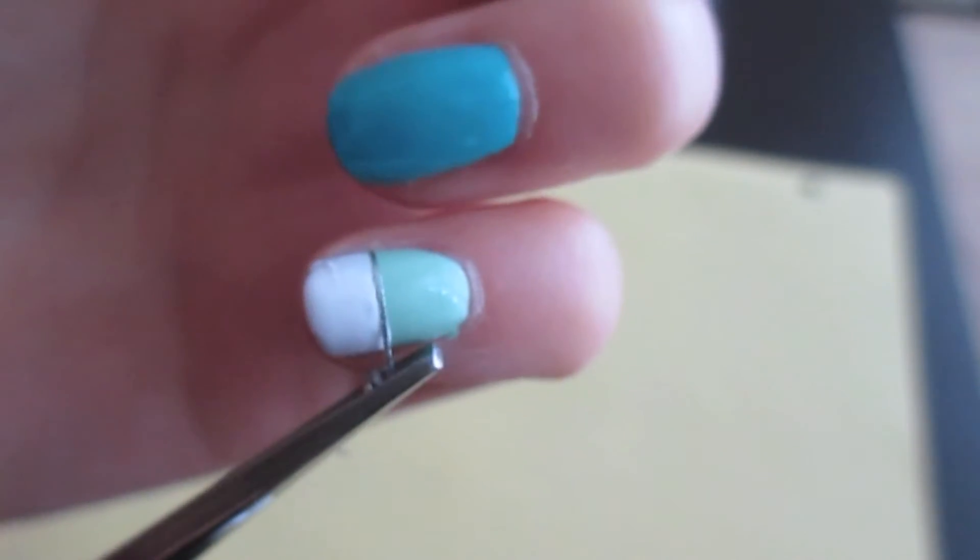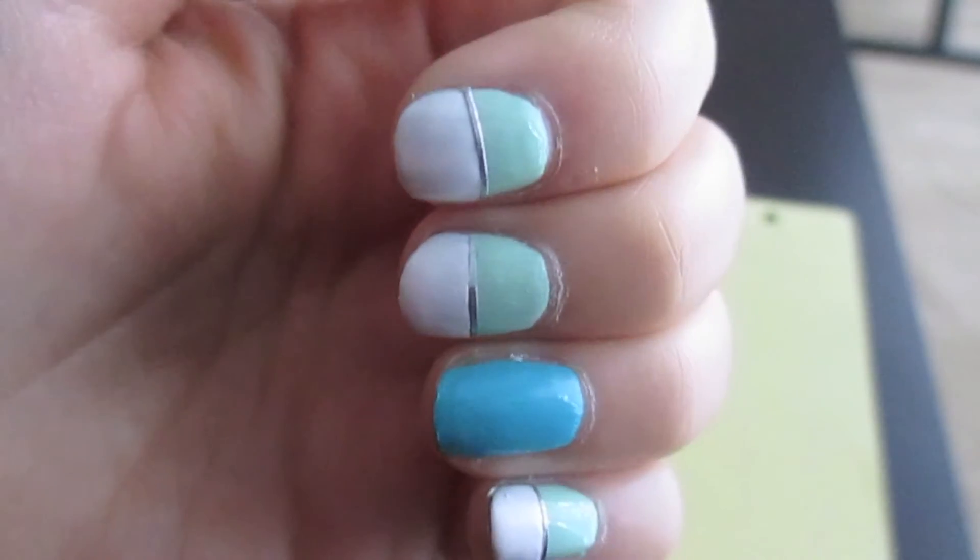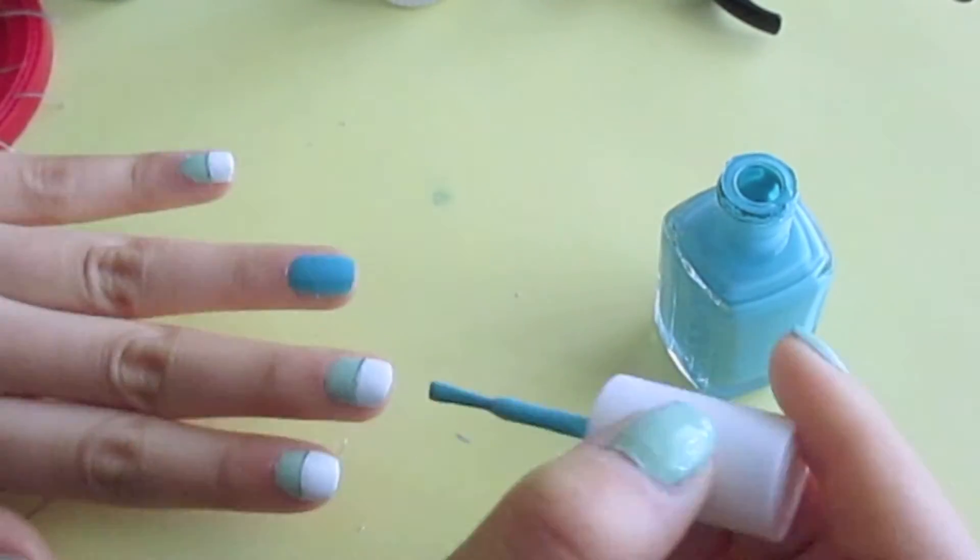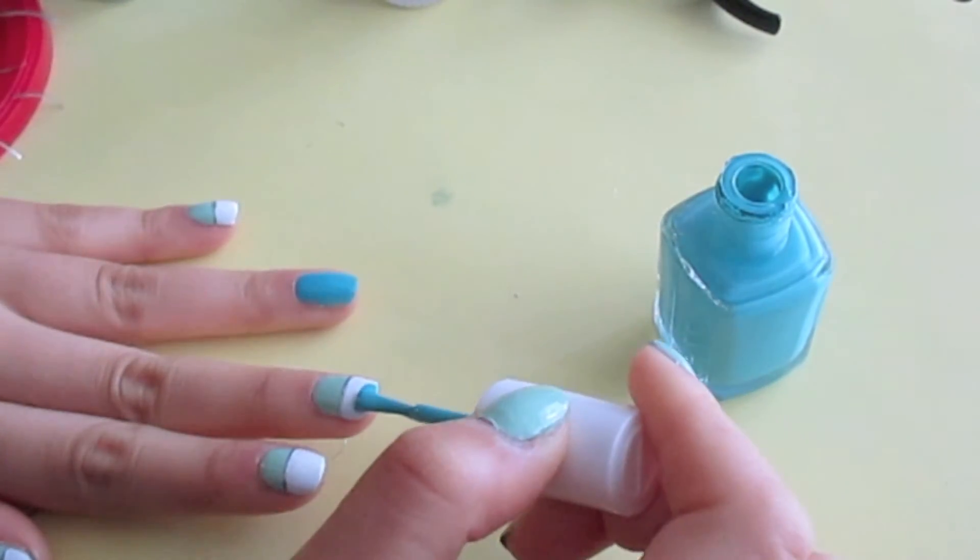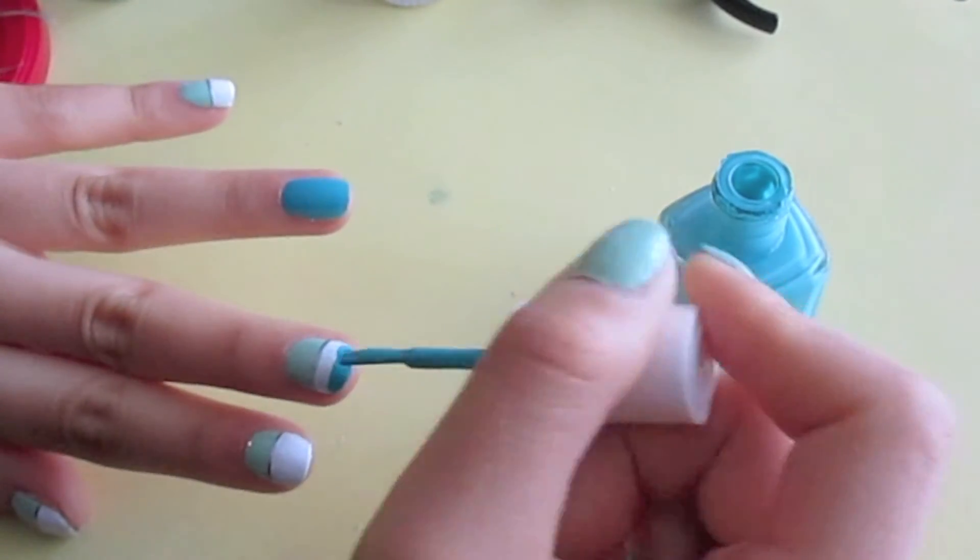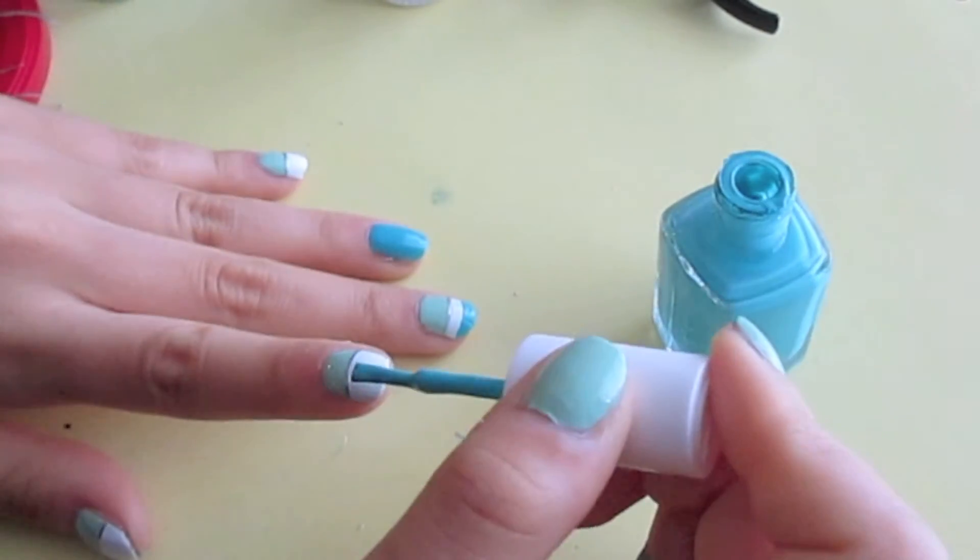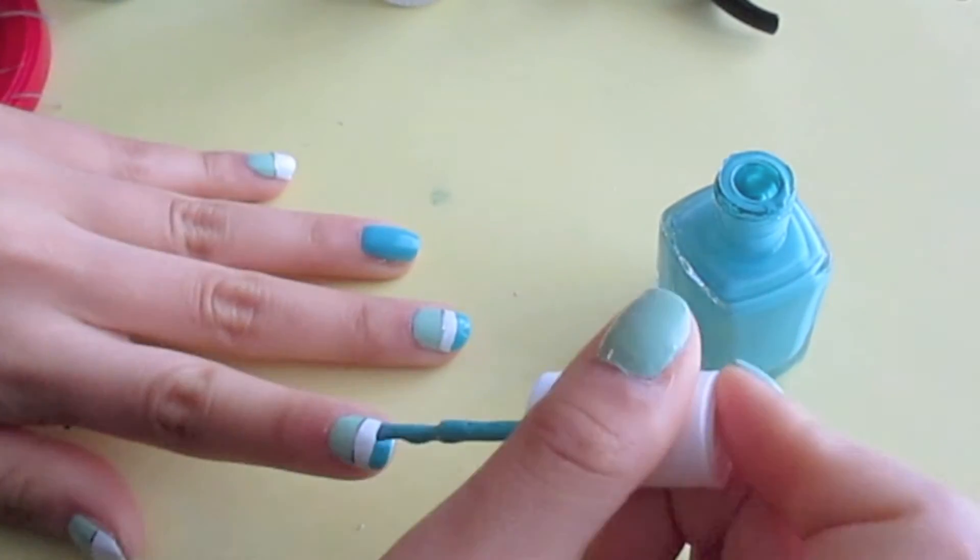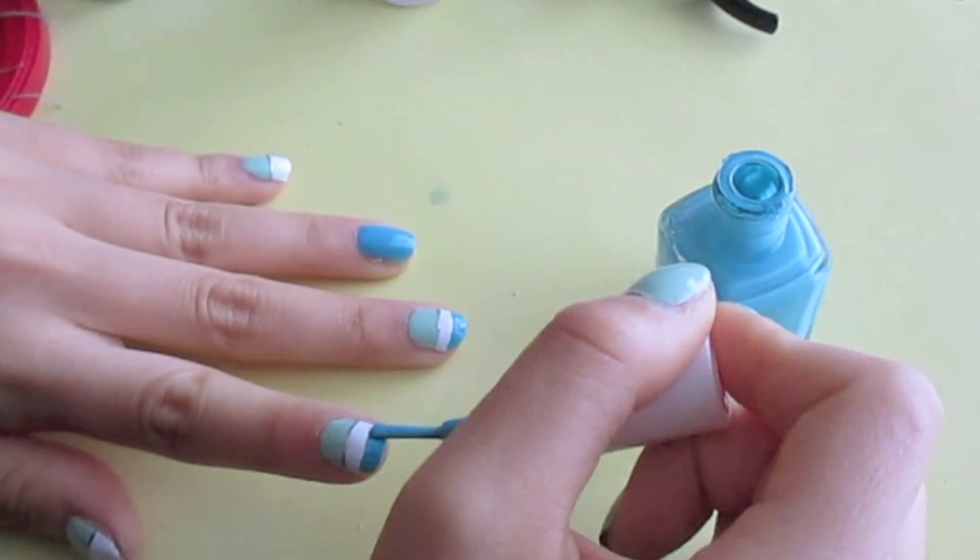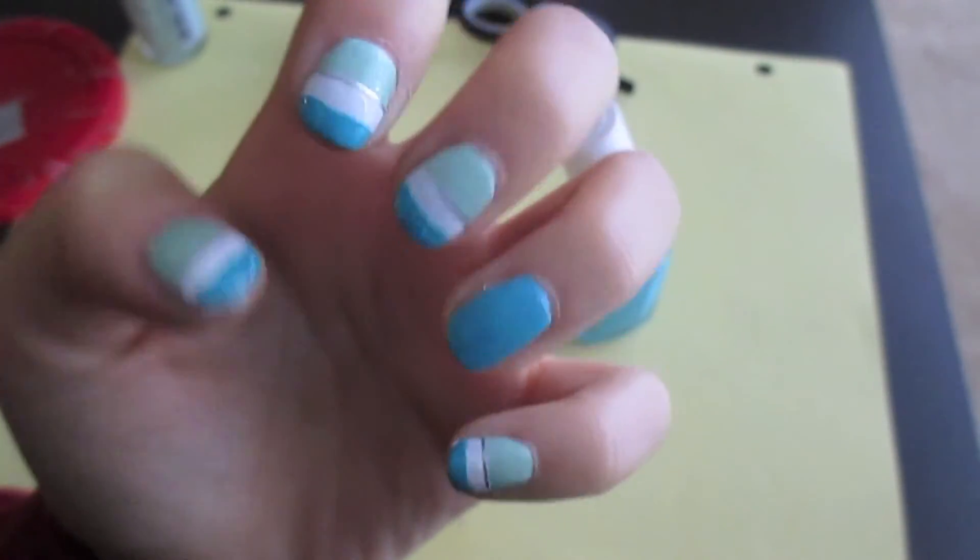So you're just going to do this for all the nails except for the ring finger. Once they have dried, take the dark blue color and paint the top half of the white part of the nail. And once again, don't worry if it's not perfect.